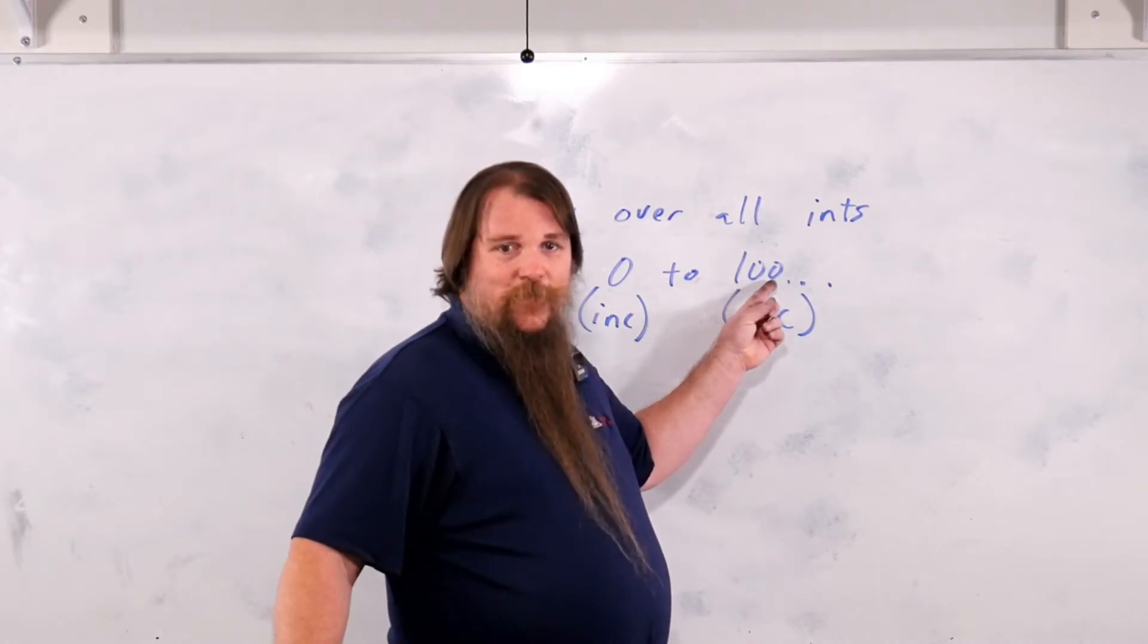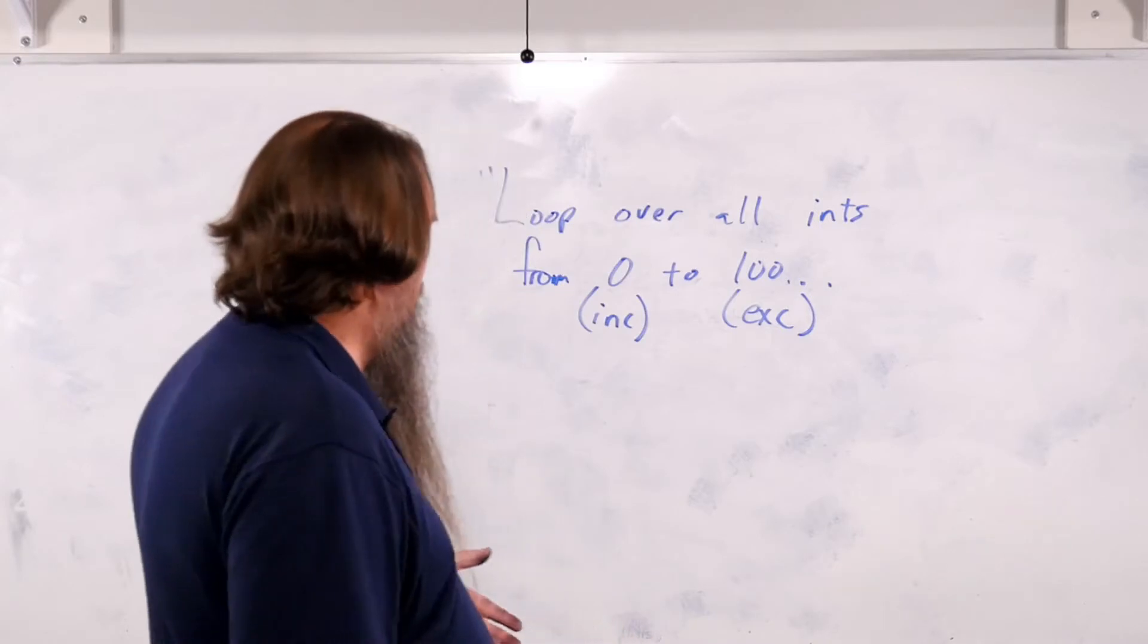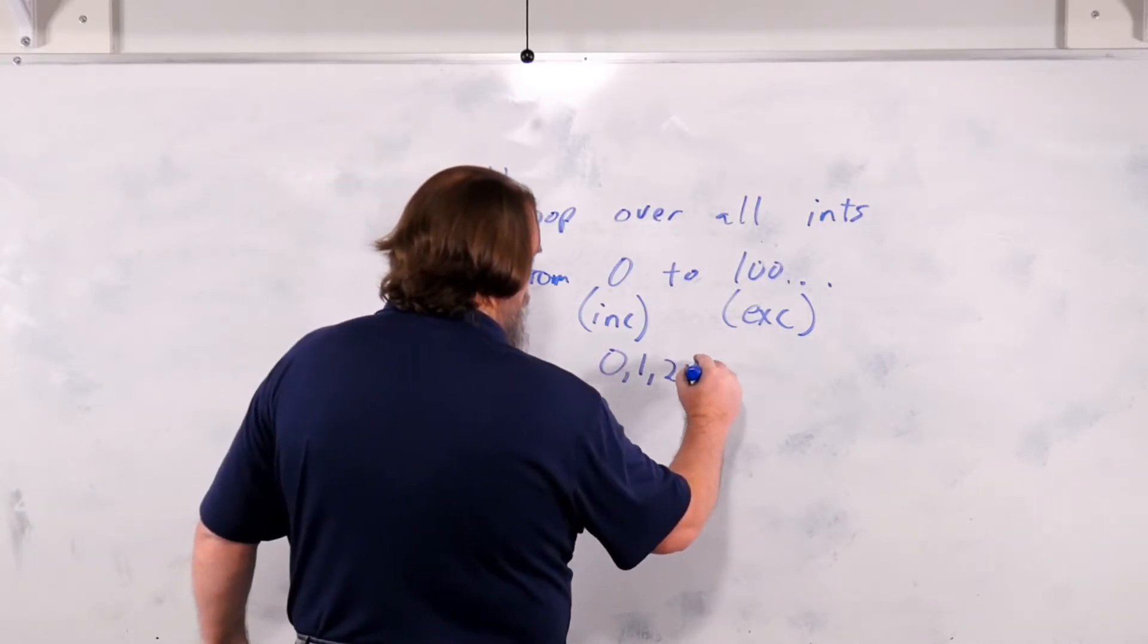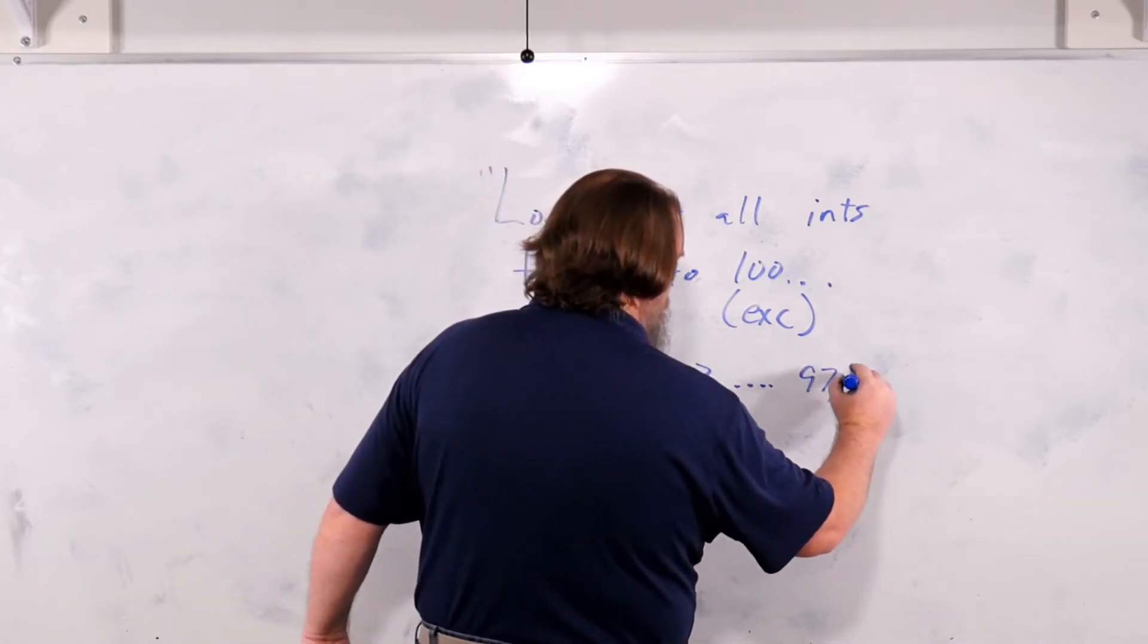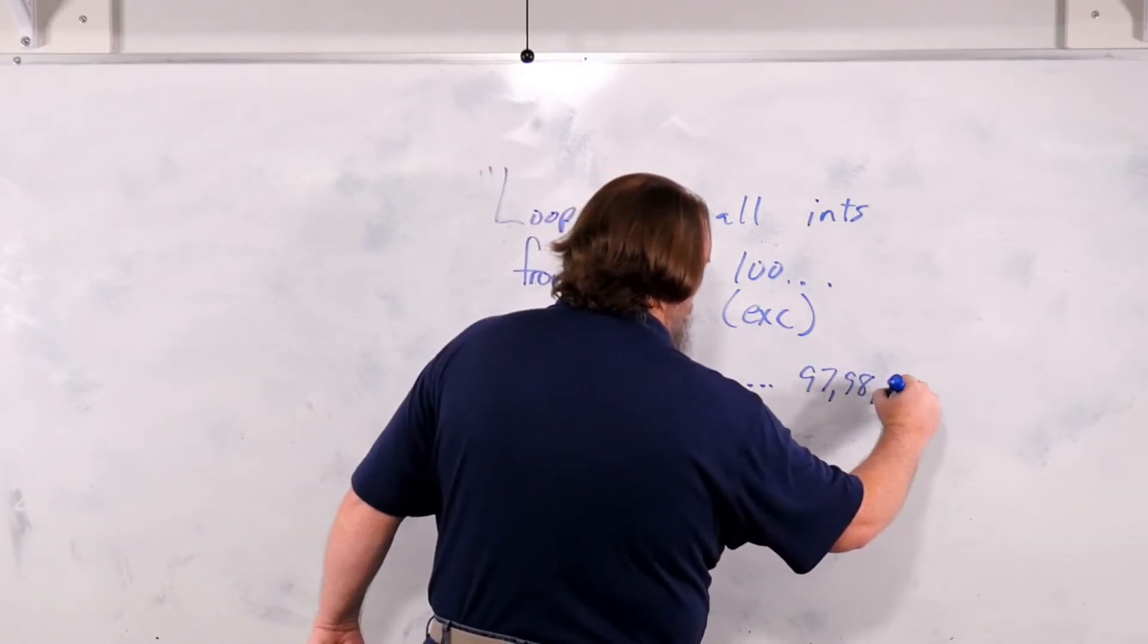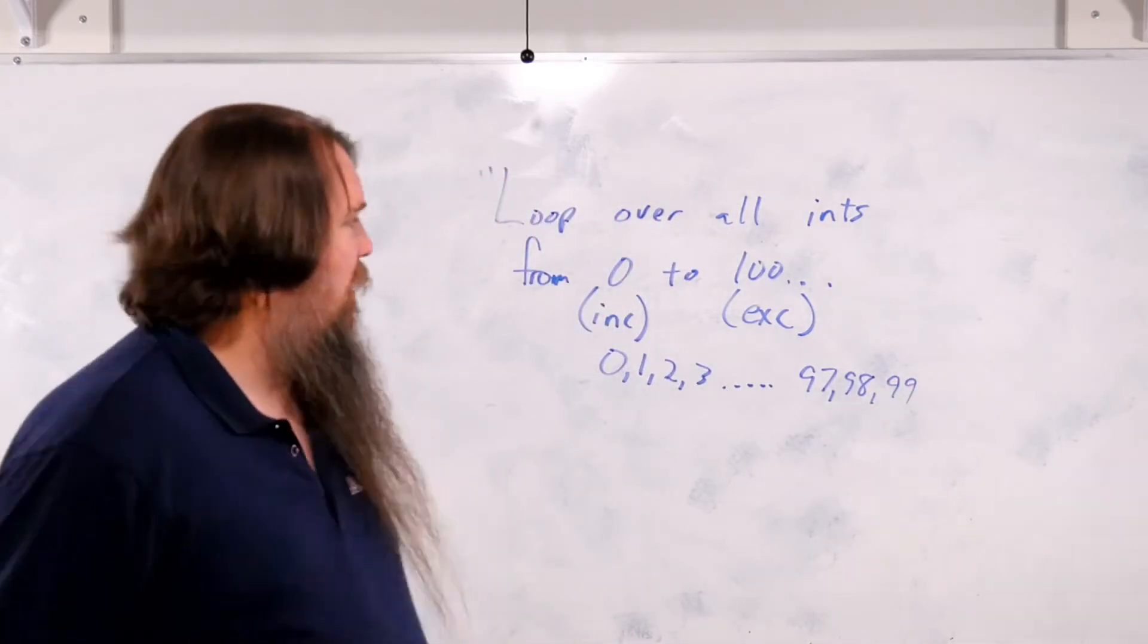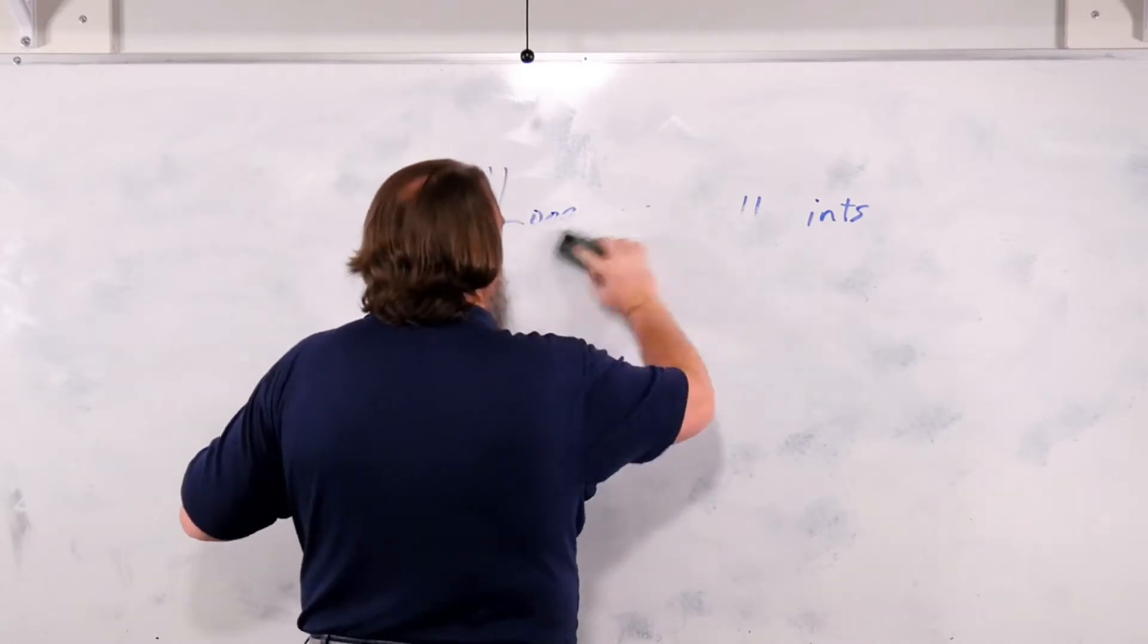Again from slicing, exclusive bound means not contained within. So we're talking about the numbers 0, 1, 2, 3, all the way up to 97, 98, and then ending with 99. All right, classic thing that we do all the time. How would we write this?